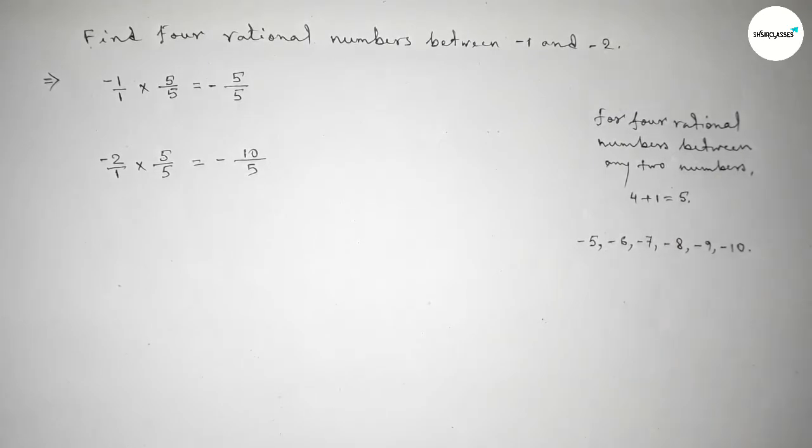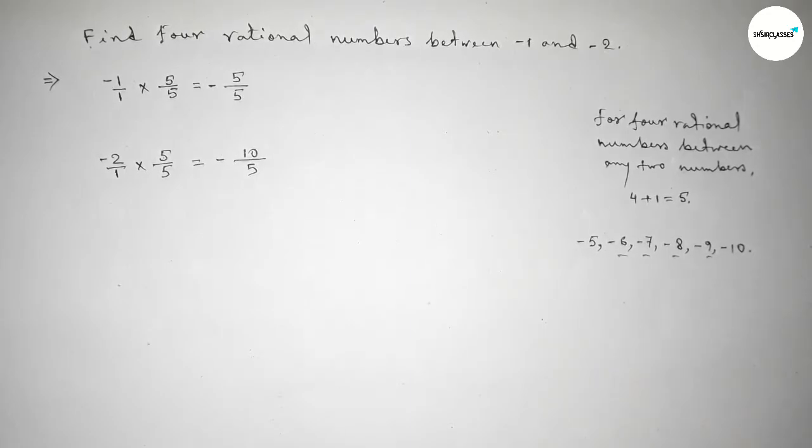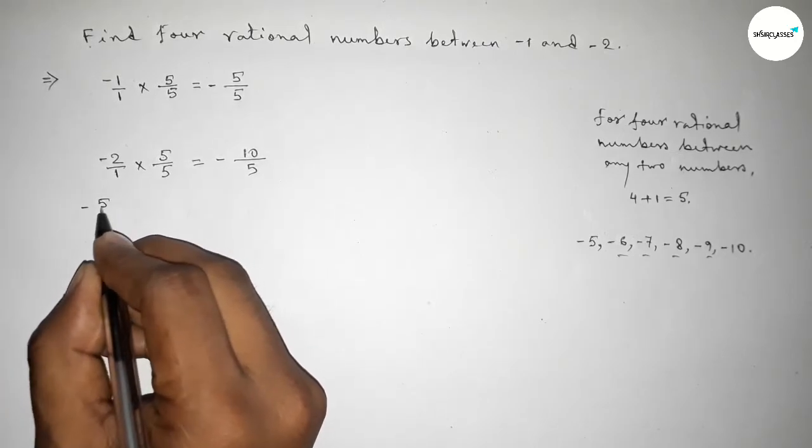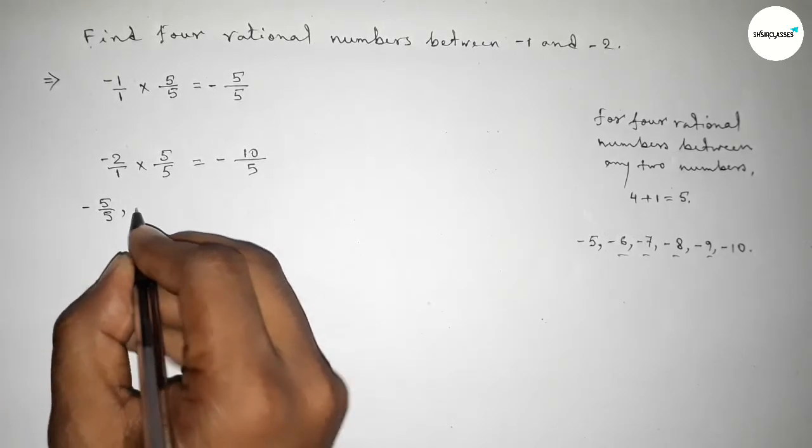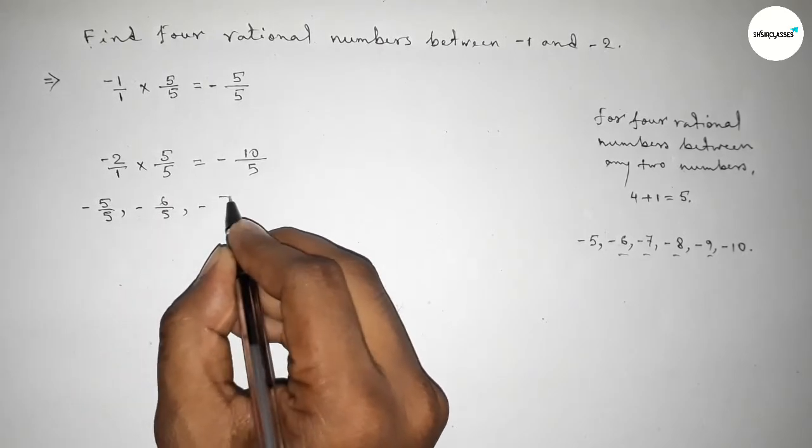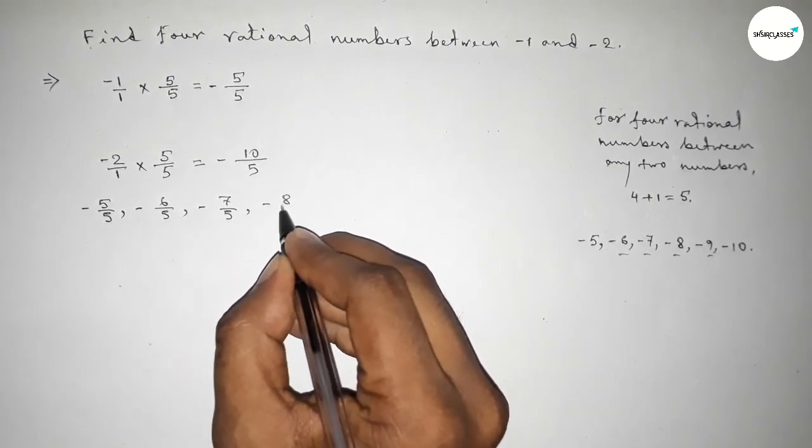Now, forming all the rational numbers. First, -5/5, minus 6/5, minus 7/5, minus 8/5, minus 9/5, and last minus 10/5.